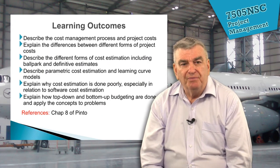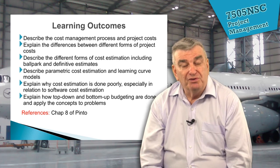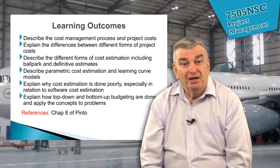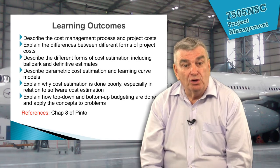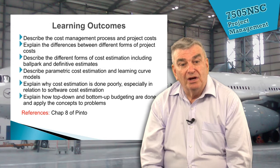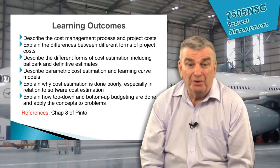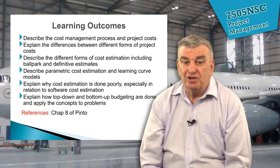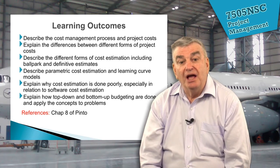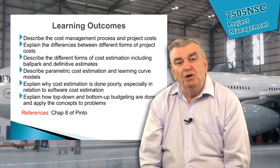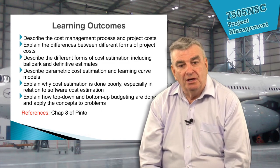In cost estimation and budgeting, we're going to be describing cost management and project costs, explaining the differences between the different forms of project costs. We're going to describe the different forms of cost estimation, including ballpark and definitive estimates, and talk about parametric cost estimation and learning curve models. We'll explain why cost estimation is done poorly, especially in relation to software cost estimation — whenever you think of software, think of high risk. Finally, we'll explain how top-down and bottom-up budgeting are done, and apply the concepts in problems, including one on Richard Branson's Virgin Galactic space vehicle.